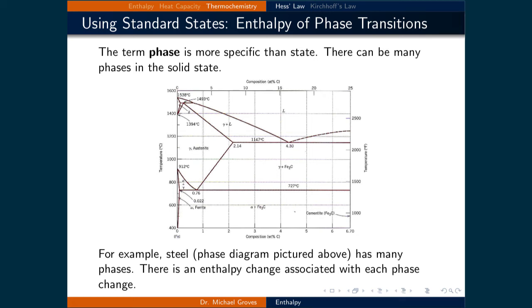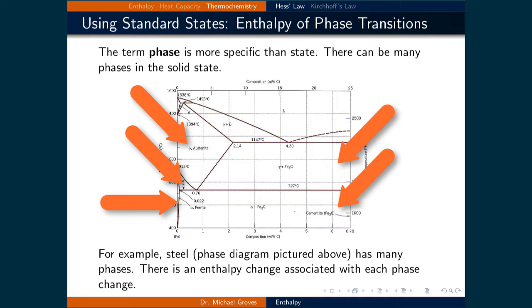Another example of using standard states is when calculating phase transitions. The term phase is more specific than state, since there can be many phases in a given state. For example, for steel, whose phase diagram is provided, has many solid phases. For each phase change, there's a change of enthalpy.